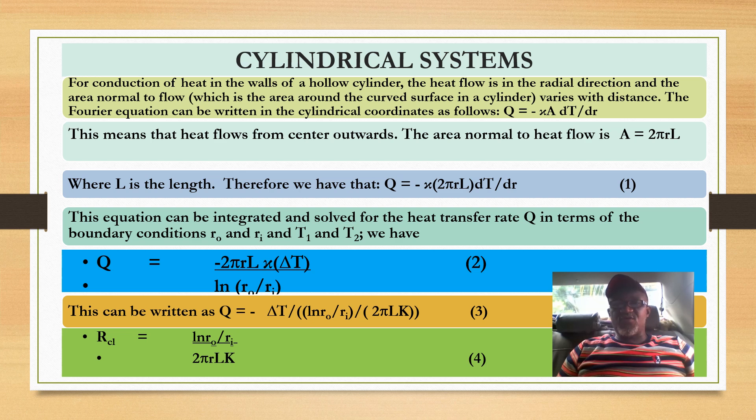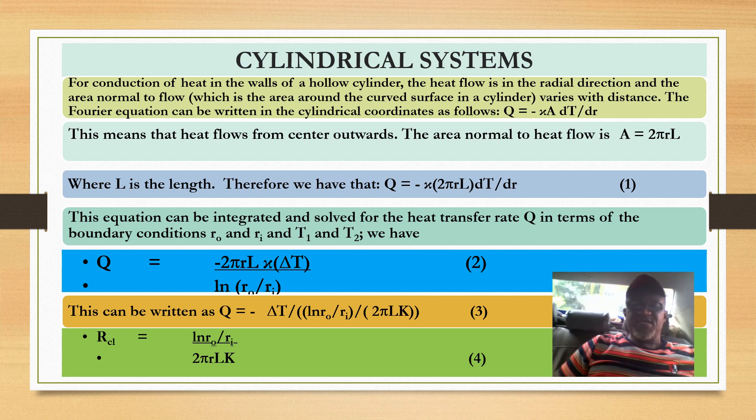For conduction in the walls of a hollow cylinder, the heat flow is in the radial direction. Remember for the flat wall, we looked at the area normal to flow. The area normal to flow for a cylinder is A = 2πrL, where L is the length. We'll do the same integration. We have equation 1: Q = -k(2πrL)dT/dr. You can see before we had x, now we have r.